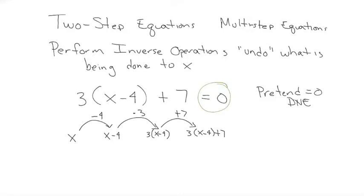When I want to solve an equation, I need to perform the steps — subtracting four, multiplying by three, and adding seven — in reverse order using their inverse operations. Working backwards: subtract seven, then divide by three, then add four. So the process is just performing inverse operations to undo what's happening to x.